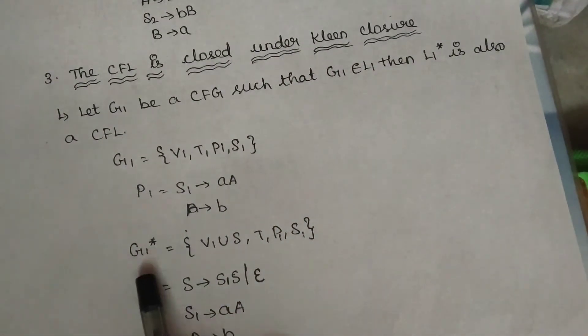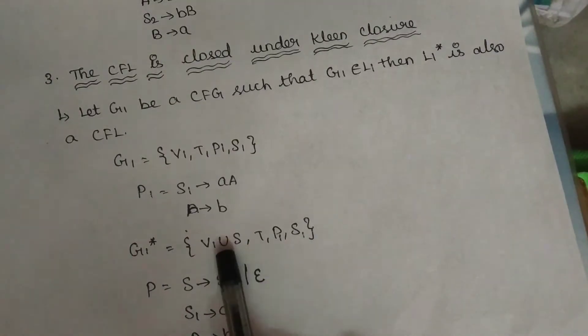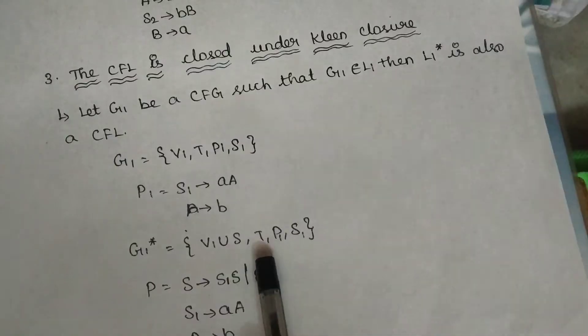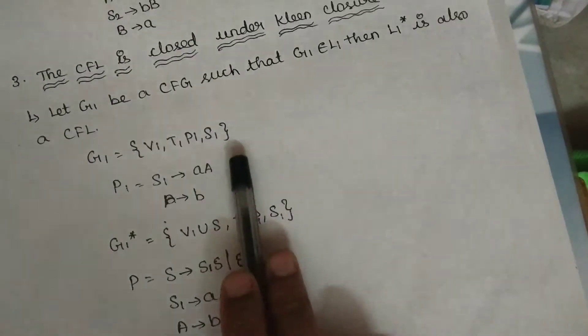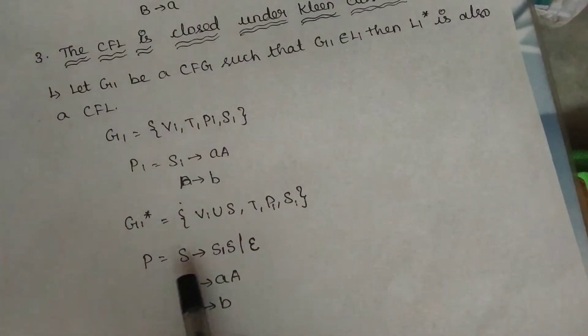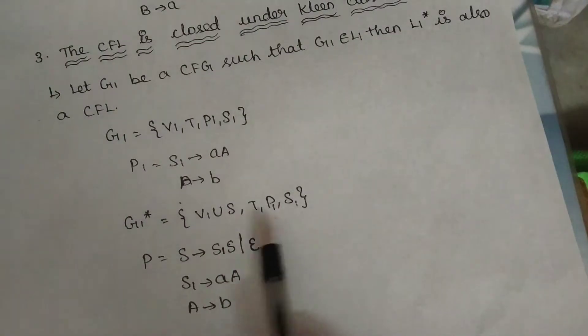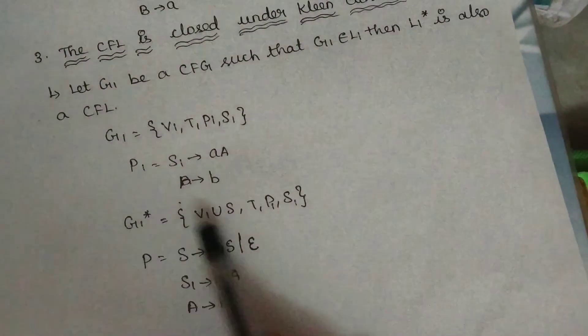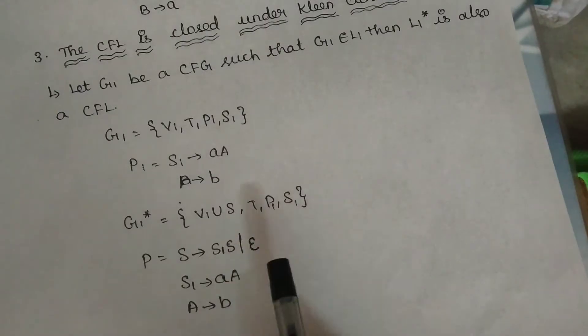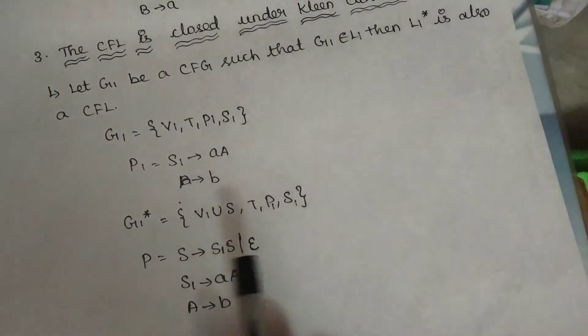If you apply the grammar, you create a new start symbol. If you use terminals or production rules, you can use start symbols. Kleene closure is applied to particular strings an infinite number of times — you can repeat strings using Kleene closure.